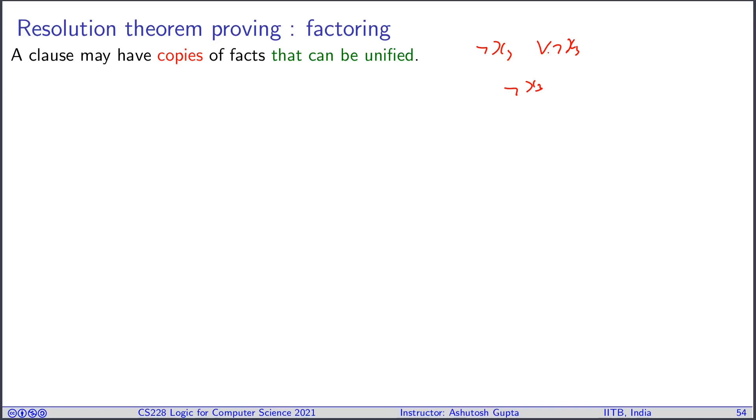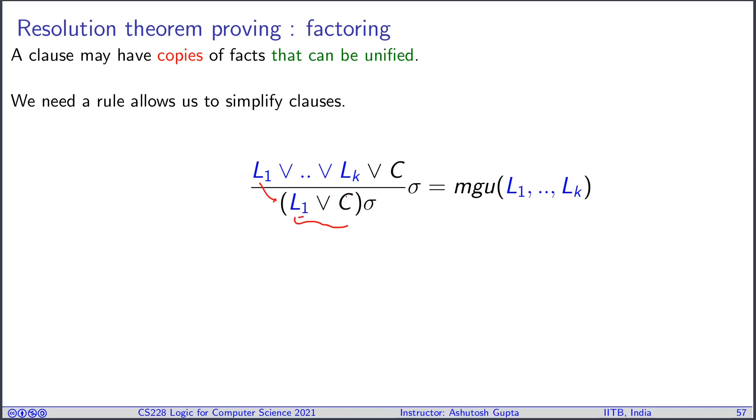What can happen is you can have several literals appearing in your clause, let's say L1 to Lk, and there is a way to unify L1 to Lk. There is a unifier which should make them equal. If that is possible, what you can do is essentially keep one copy of them and apply sigma and reduce the size of the clause. This can very well happen. This rule is called the factor rule.